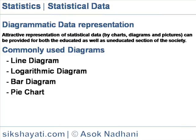Bar diagram: Horizontal bar diagrams are used for qualitative data or data varying over space. Vertical bar diagrams are related to quantitative data or time series data. Component or sub-divided bar diagrams are used for representing data divided into a number of components.